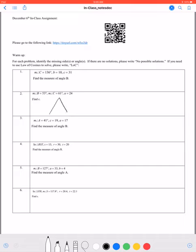Our next triangle has B is 53 degrees, C is 61 degrees, and the measurement of A is 24.